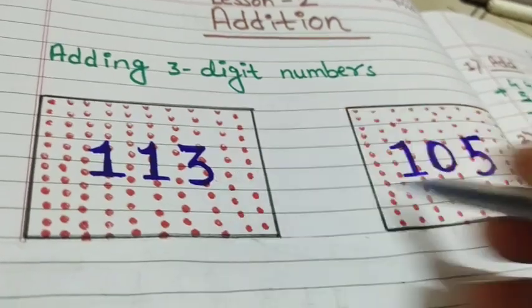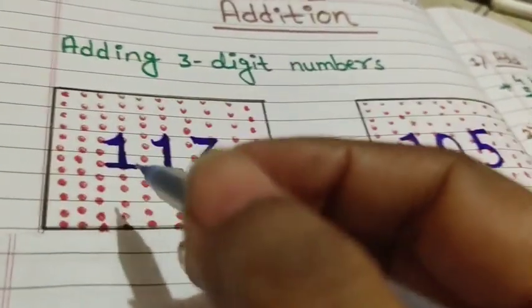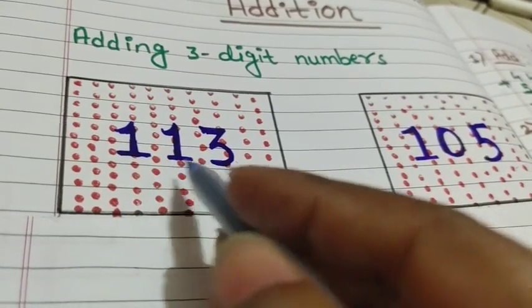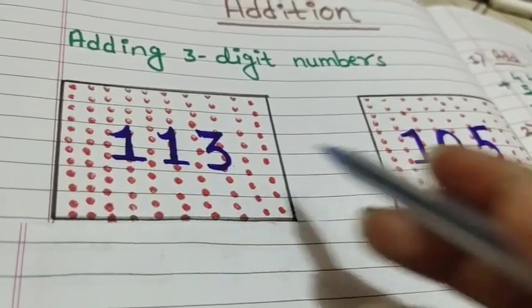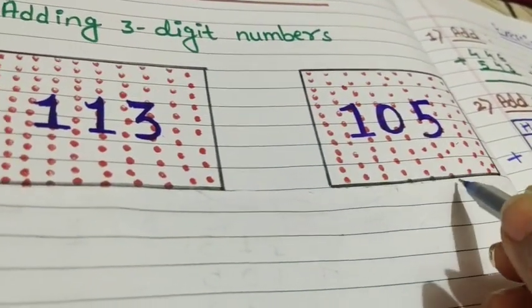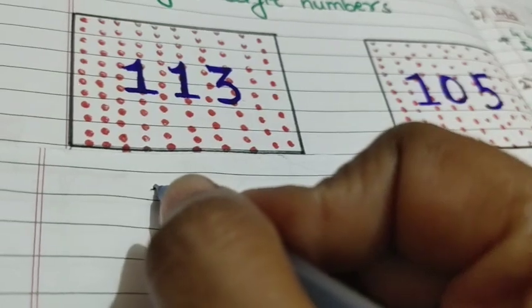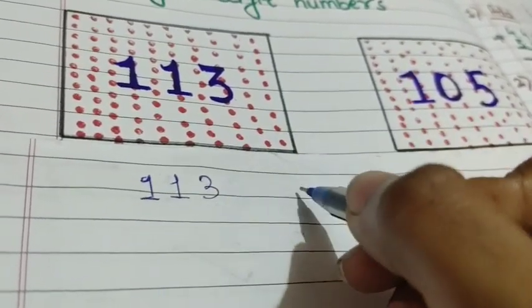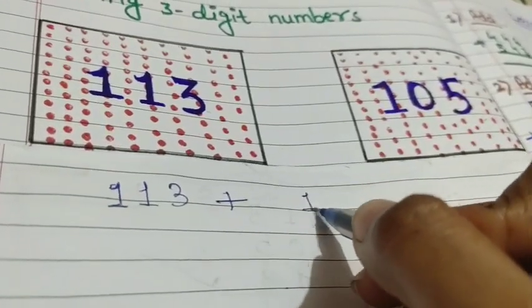You can see here there are two boxes. In the first box there are 113 dots, and in the second box there are 105 dots. So let's add 113 plus 105.